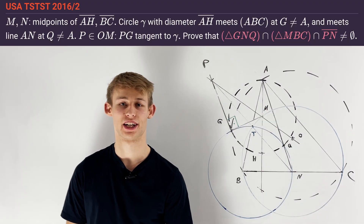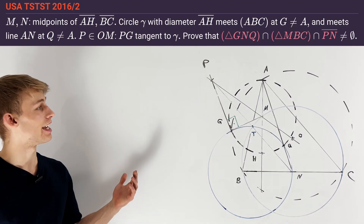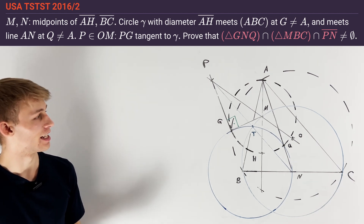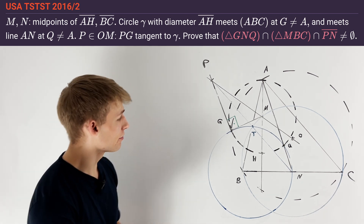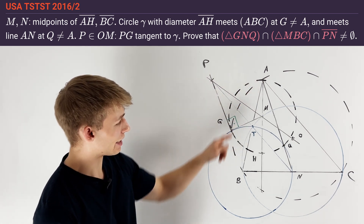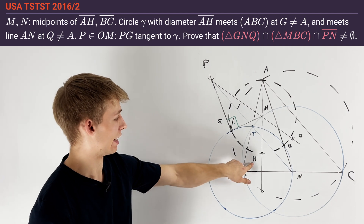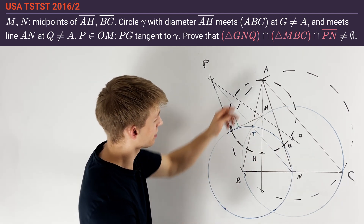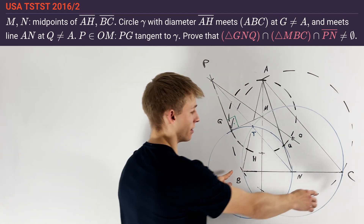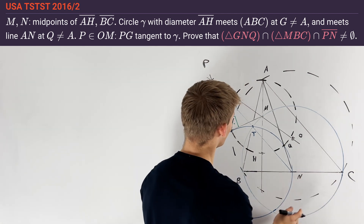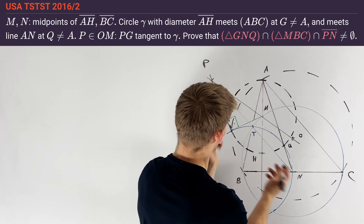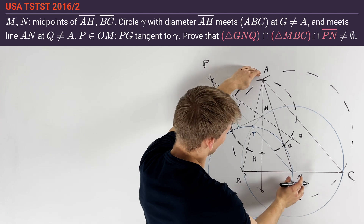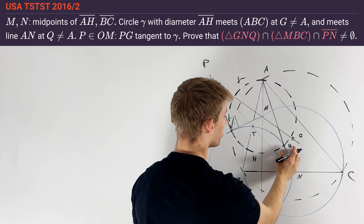Hey guys, today I want to present a solution to USA TSTST 2016 Problem 2. Let's take a look at our picture. We have given an acute triangle ABC with orthocenter H. Points M and N are defined as the midpoints of line AH and line BC. We consider the circle with diameter AH, which I want to call gamma. This circle intersects line AM at a point Q, not equal to A.